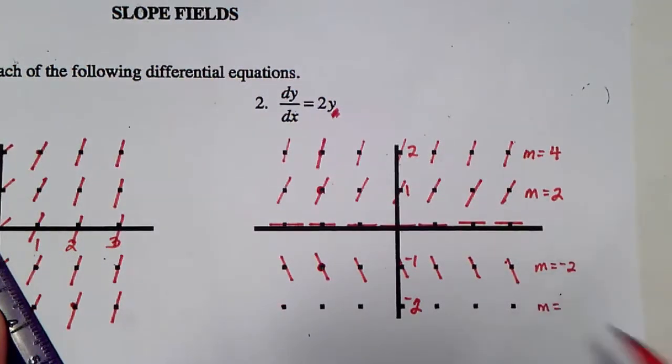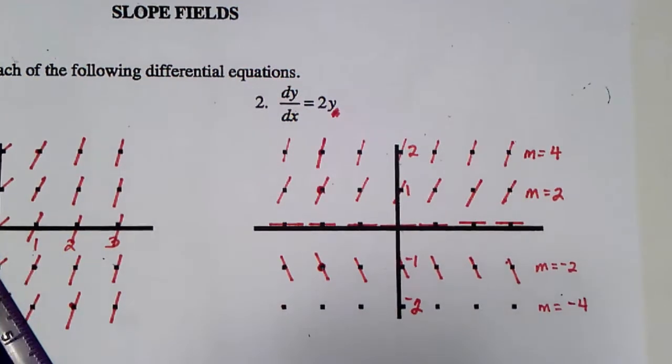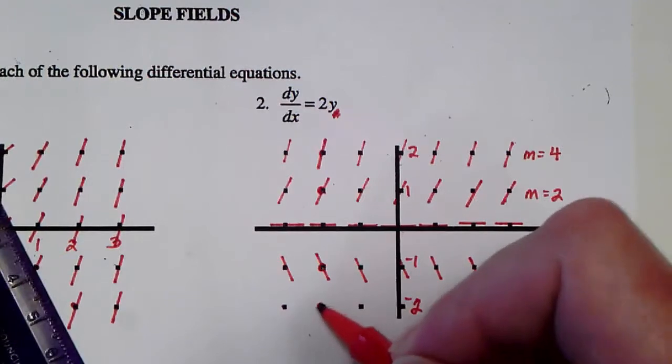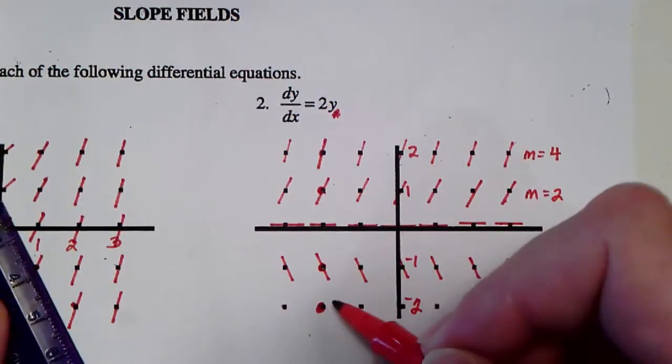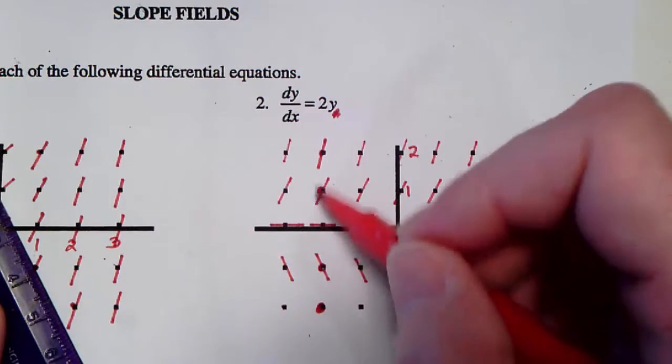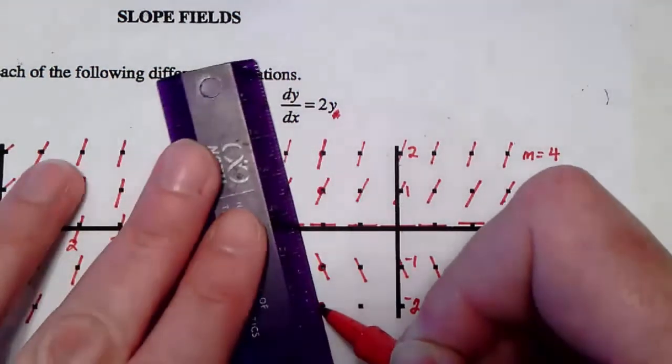And then finally where y is negative 2, I'm going to have a slope of negative 4. I'm going to start here as my starting point. I can go up 1, 2, 3, 4, and to the left one.